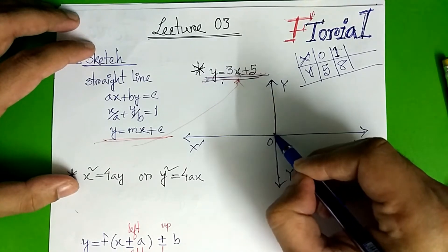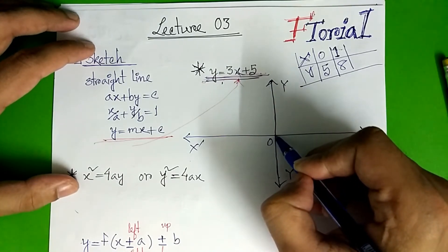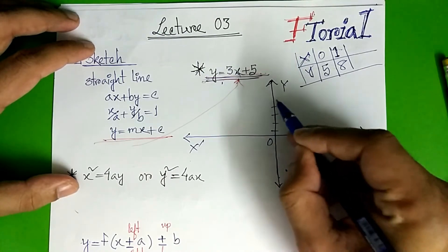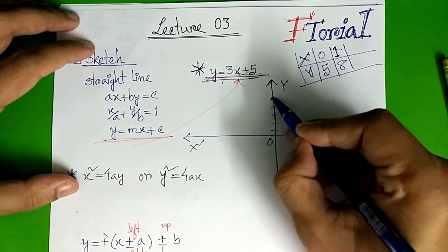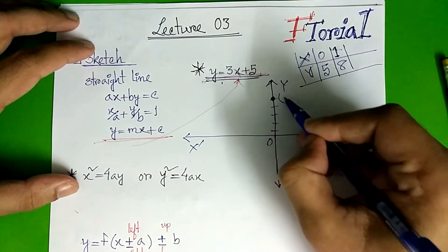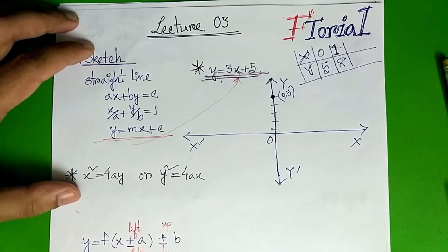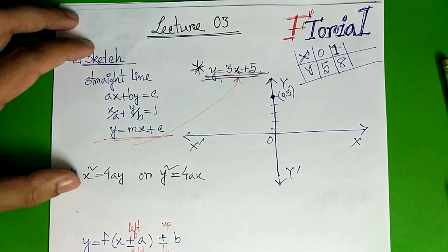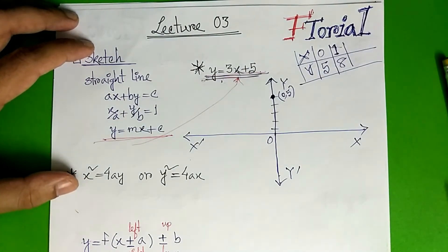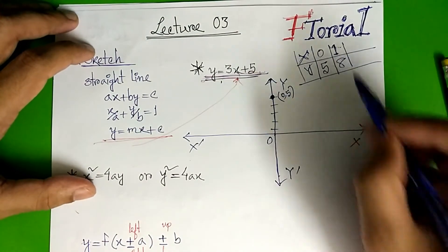Y coordinate is plus 5, so counting 1, 2, 3, 4, 5. The first point is (0, 5). Then the second point: x is 1, y is 8.